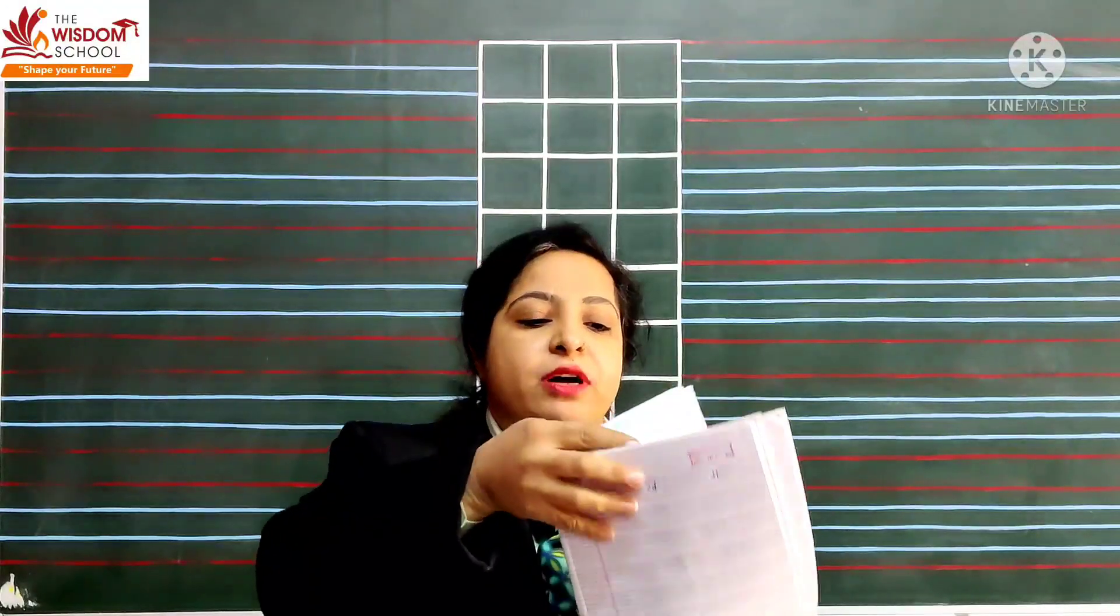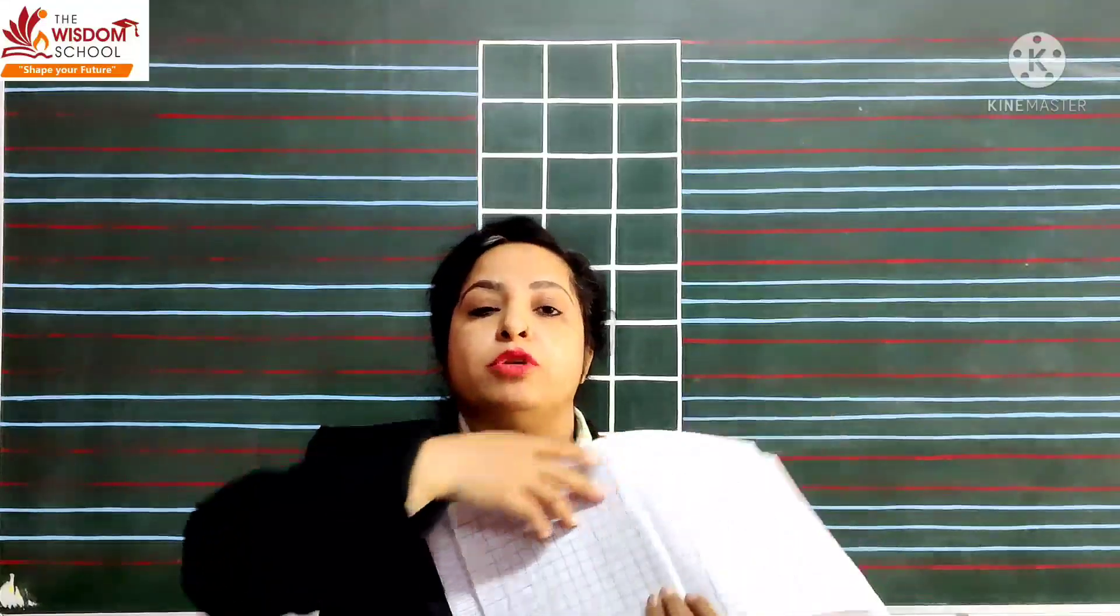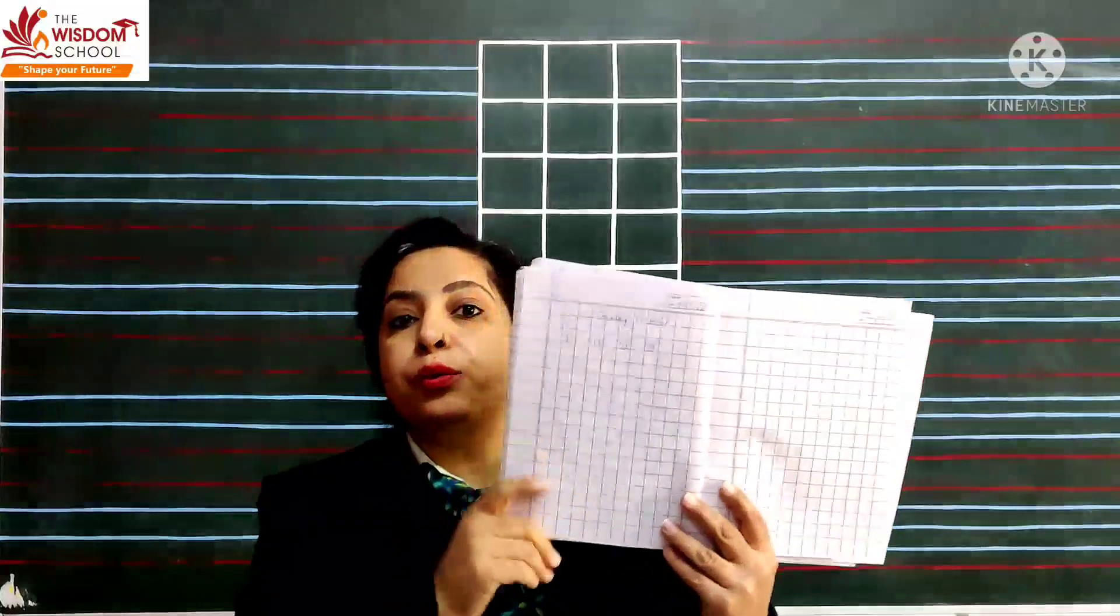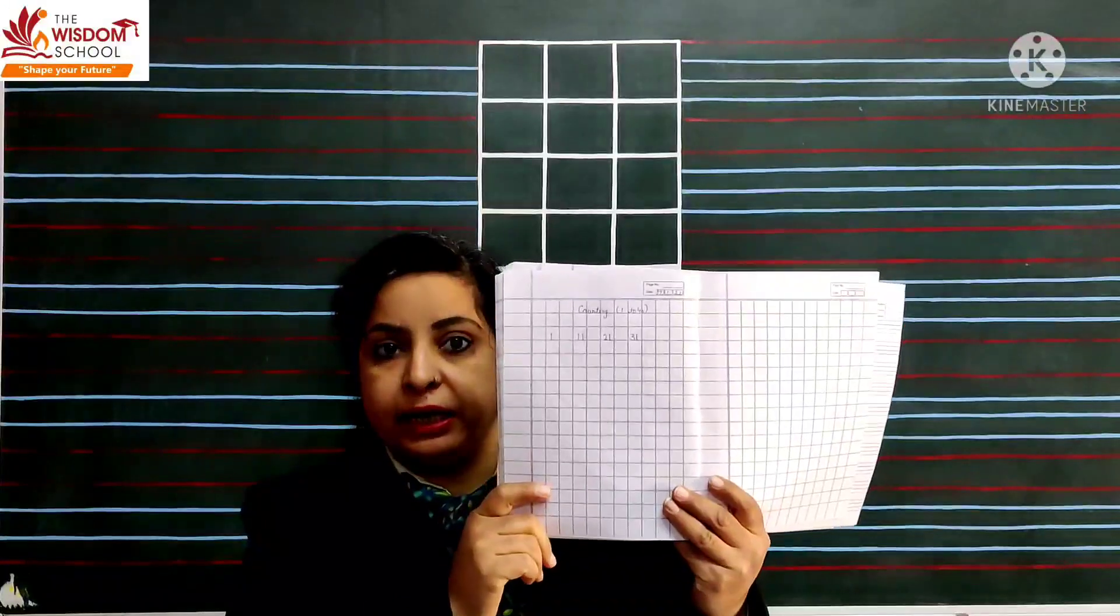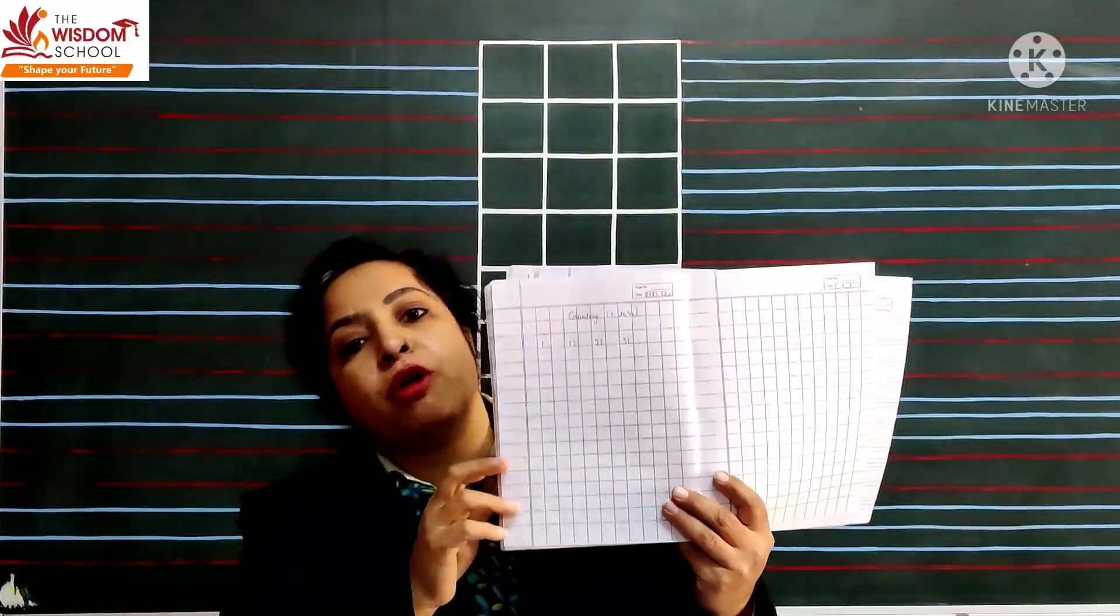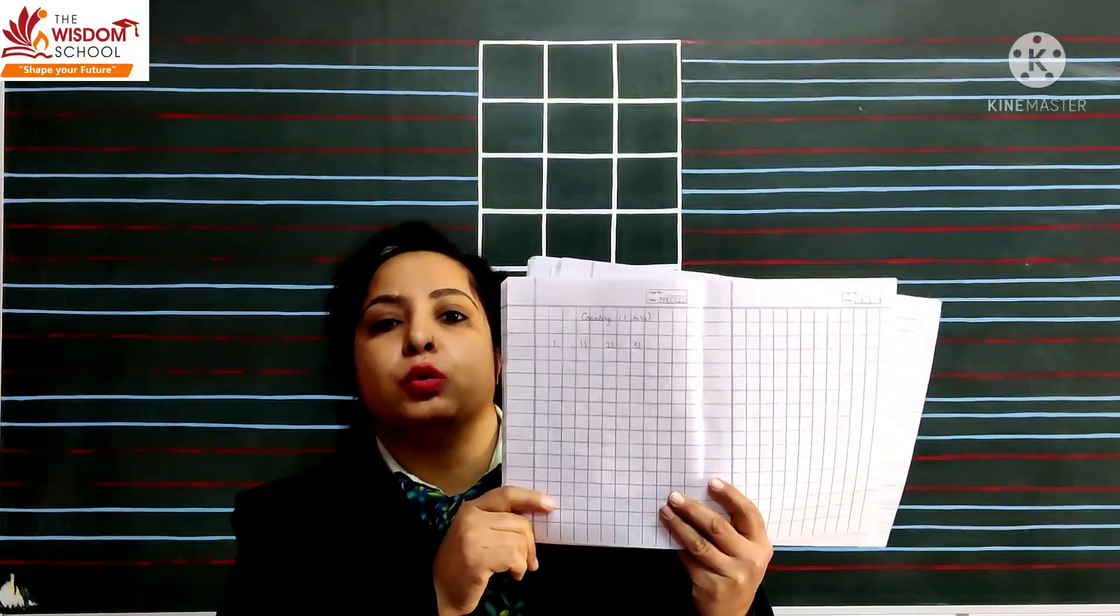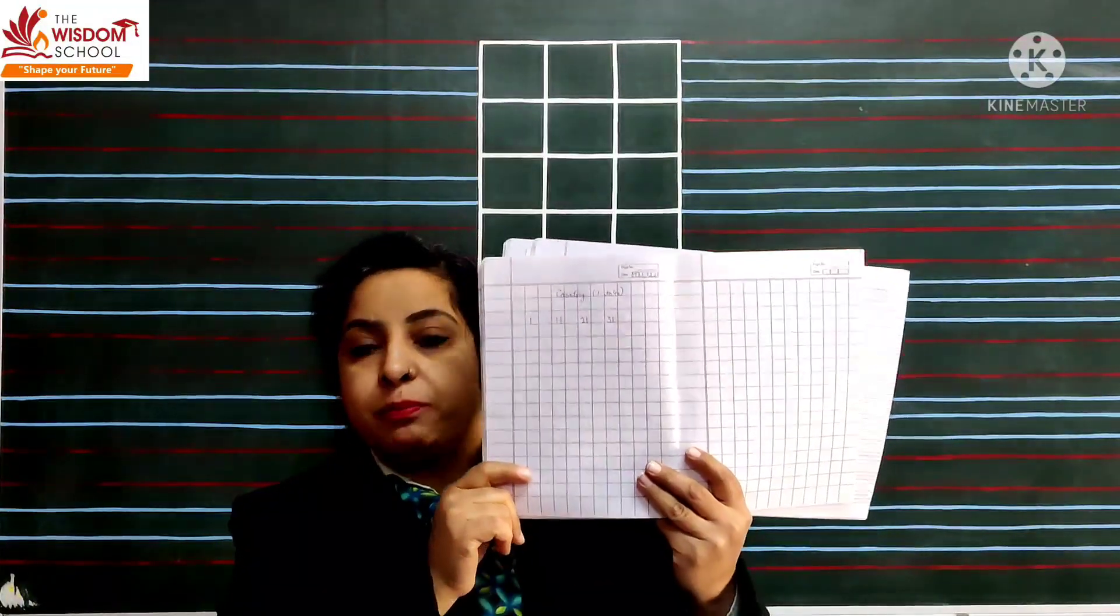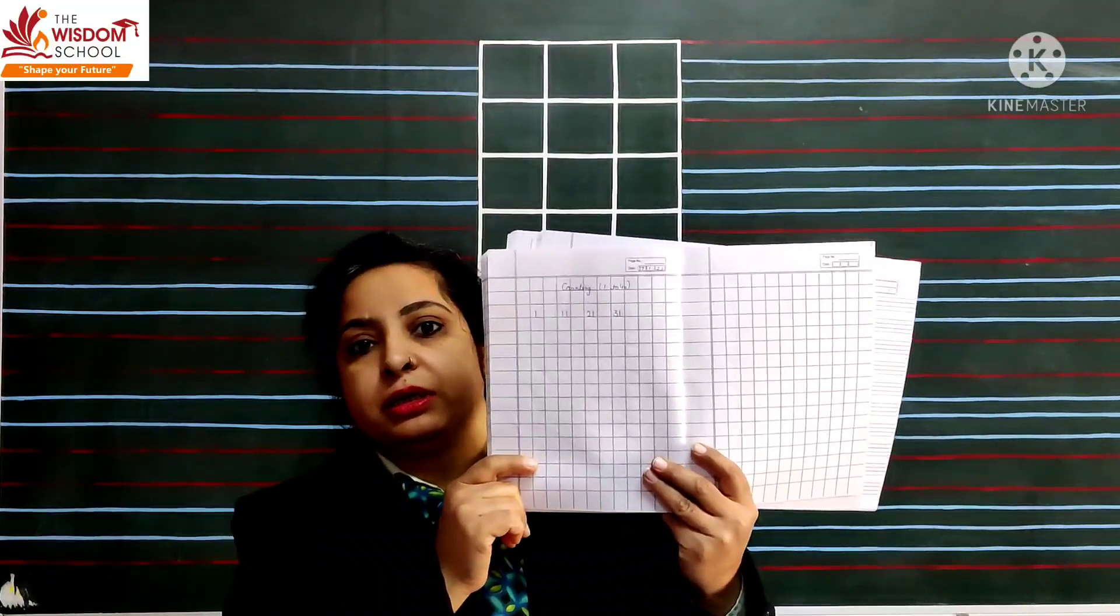Aur uske baad, humara, jo Maths ka work hai, bachche? Maths me, humane kya karna hai? Revision karna hai, kyunki mujhe pata hai, aapki 1 to 100 tak counting ho chuki hai. But, aaj, hum log ek baar 1 to 40 counting karenge, phir aapne next class me, bachche 40 to 80 karenge, phir next class me, haam 81 to 100 tak counting karenge. Okay, bachche? Toh, aaj, hum practice karna hai, aapni counting ki 1 number se lekar 40 number tak.